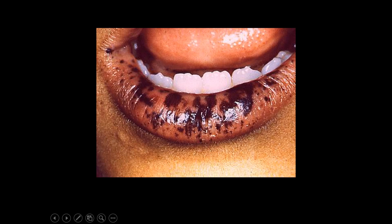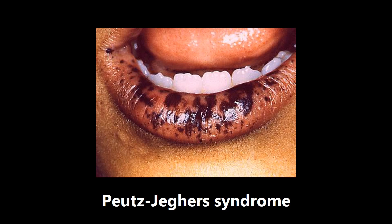This next one is an example of Peutz-Jeghers syndrome. If you see a picture like this, it's almost 99% a giveaway. This is a disease of the GI tract where you'll have numerous hamartomas occurring, as well as hyperpigmented areas that you can see on the mouth, lips, hands, and genitalia. If you see anything like this, it's almost a dead giveaway — think Peutz-Jeghers syndrome.